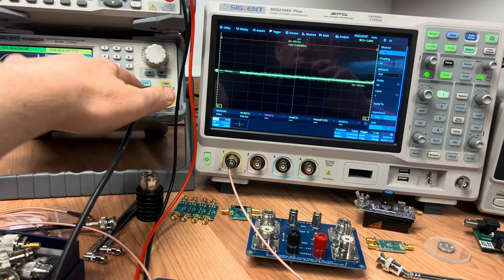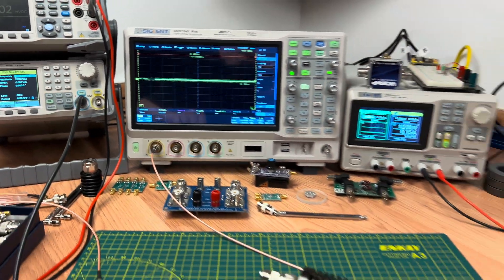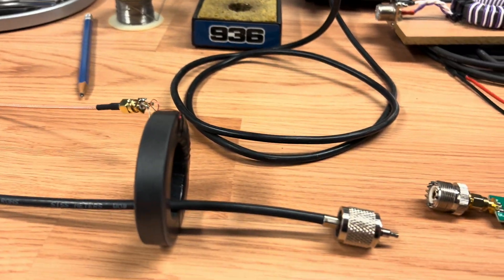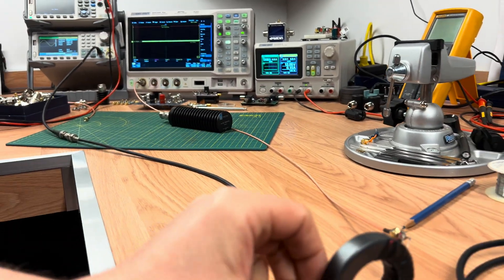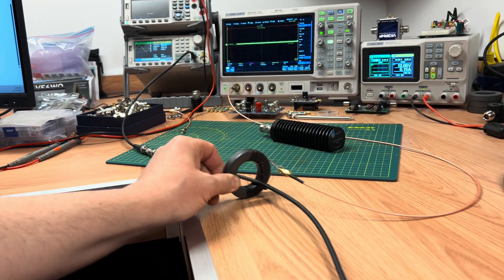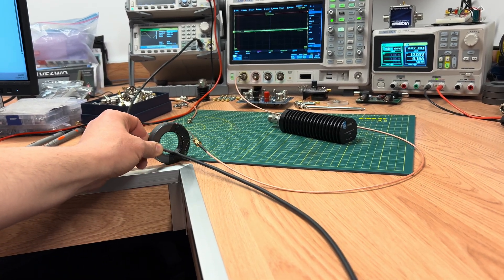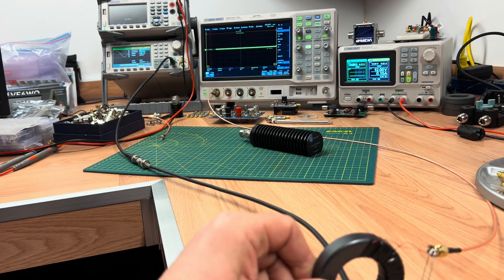So you can see the output is still on and we got nothing there. If I take and slide the probe along the coaxial cable, there is virtually no signal there on the scope.